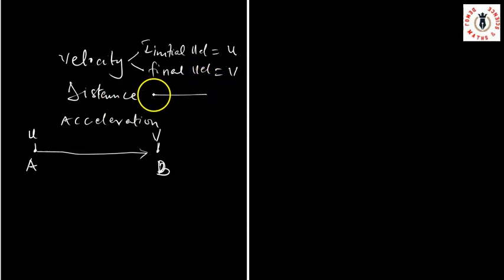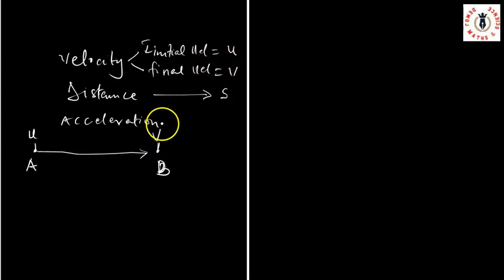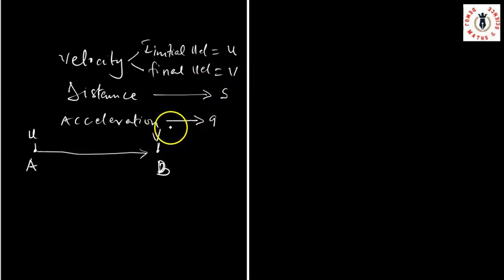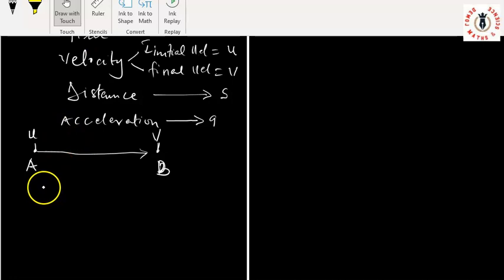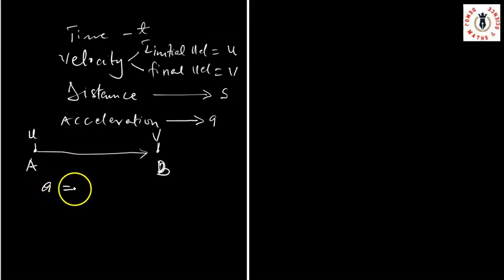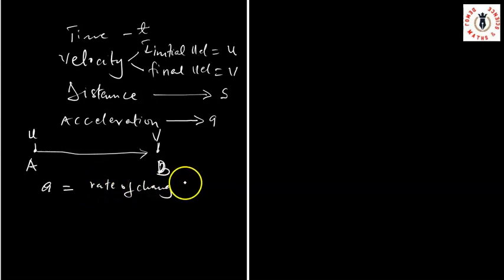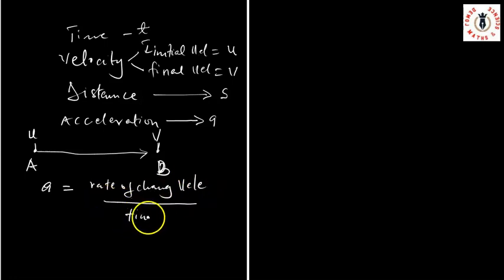Now, the distance I would have covered, let's call it S. To move from your initial velocity to a final velocity, you would have been accelerated. So let's call the acceleration A. For me to have moved from point A to point B, I would have covered this distance within a specific time. And so my acceleration will be given as the rate of change of my velocity over the time taken.